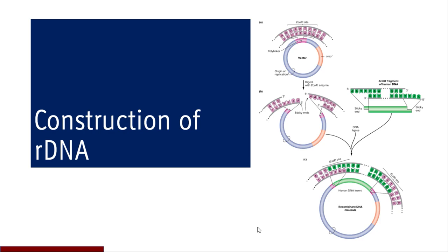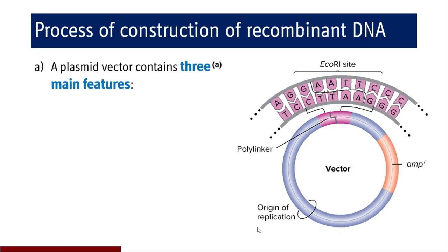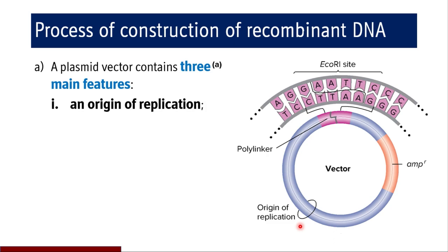Coming to the process of construction of recombinant DNA, it involves use of a plasmid vector, which is a tool of recombinant DNA technology that we discussed in the previous session. This plasmid vector contains three main features. The first is the origin of replication, that is ORI. This feature is required because the plasmid vector needs to start the replication process, so it should be self-replicating and is provided with an origin of replication.